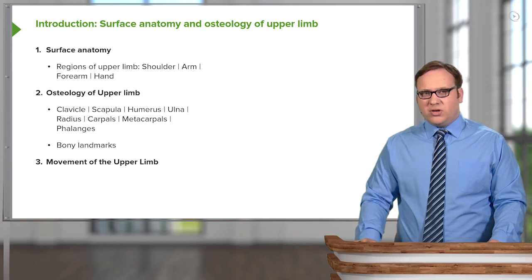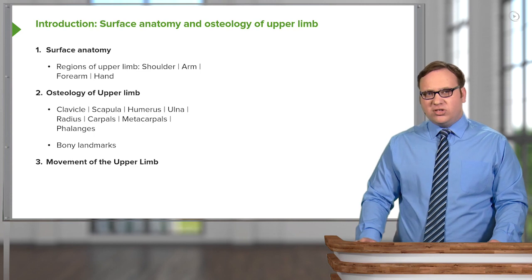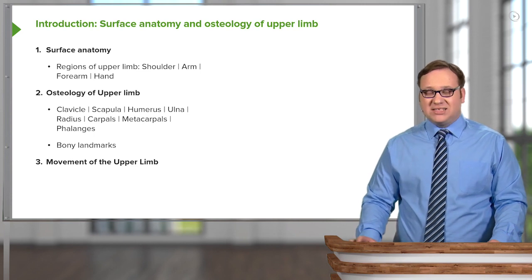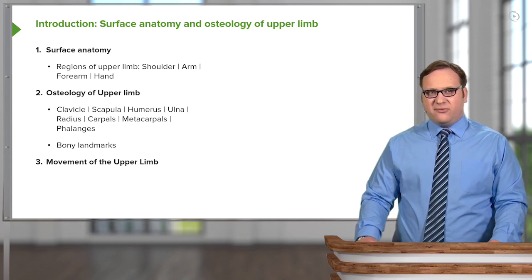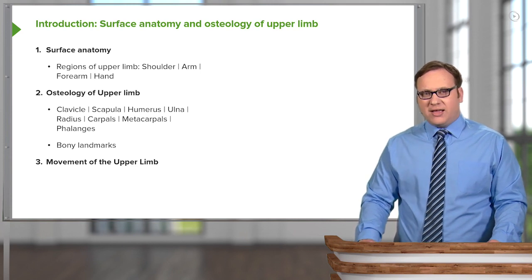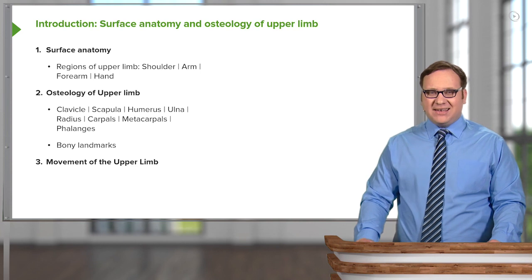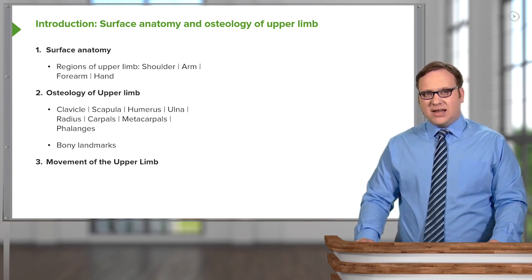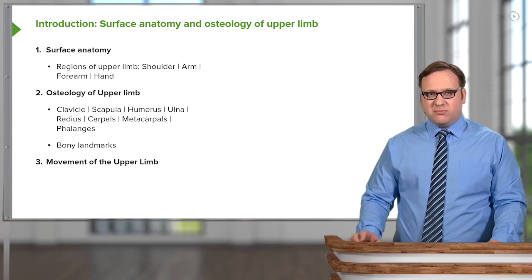In each of these bony structures, we'll look at specific landmarks, which are important for muscle attachments. We'll then finish by looking at the various movements performed by the upper limb, which is a complex part of the appendicular skeleton enabling a great range of movements.